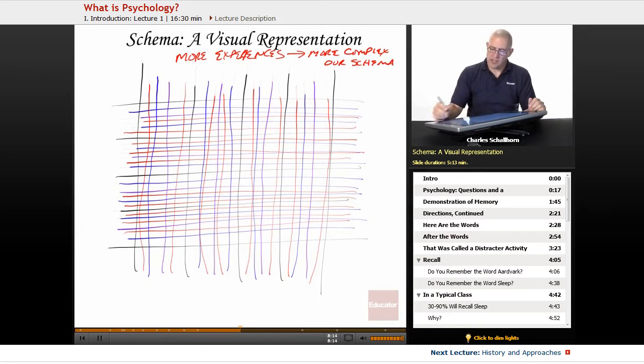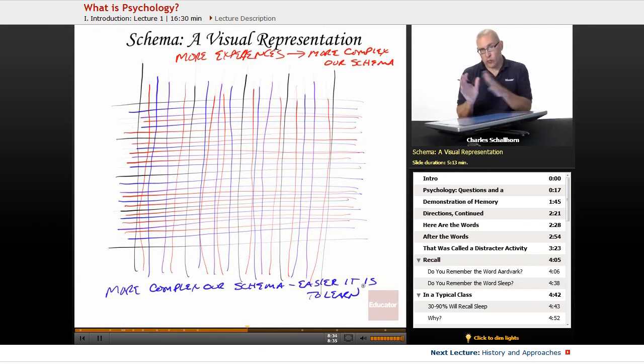The more complex our schema, interestingly enough, the easier it is to learn. So literally, by having more experiences when you're young and all through life, the more you know, the more you can know. So if your schema is filled up with experiences from reading, from television documentaries, from travel experiences, from experiences doing different sports and dance and acting and music and all these different things, the more experiences you have, the more complex your schemas get, the more complex your schemas get, the stronger your brain gets.